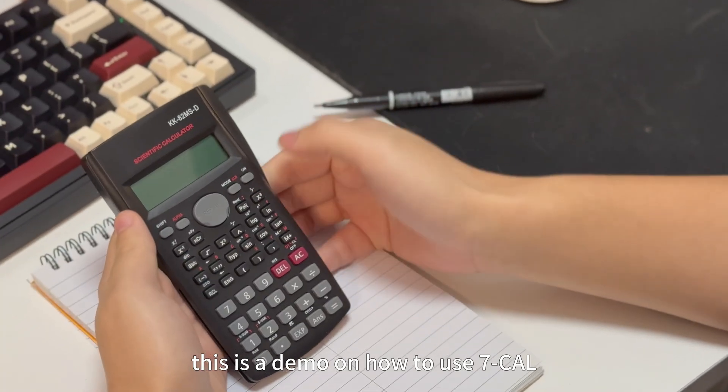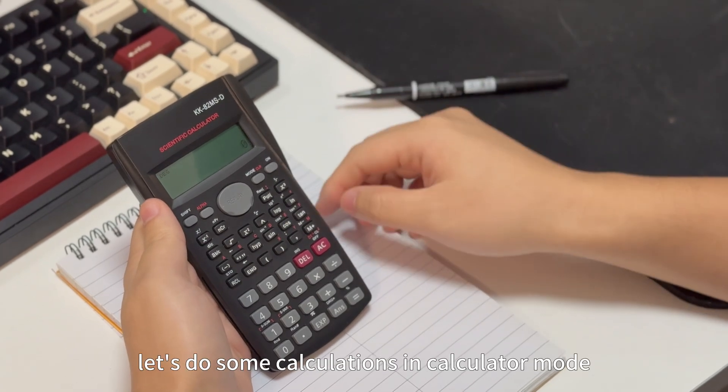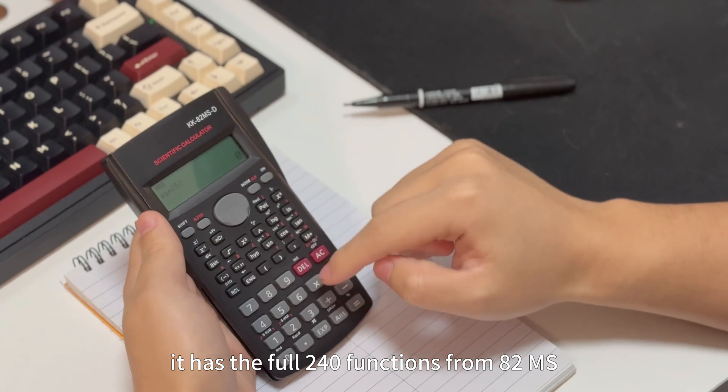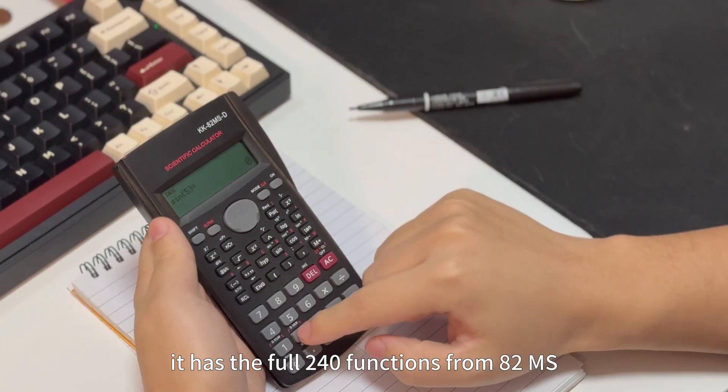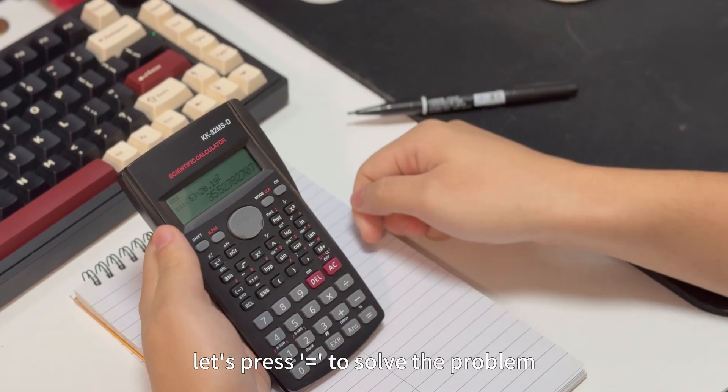This is a demo of how to use 7 cal. Press on key to turn on. After turning on, let's do some calculations in calculator mode. It has the full 240 functions from 82ms. Let's press equal to solve the problem.